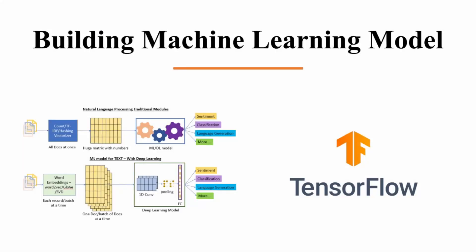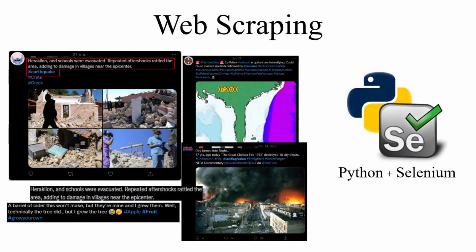Our innovation does text classification using the NLP type of machine learning that we developed using TensorFlow as part of the innovation workflow. The first step is web scraping of Twitter posts that have hashtags related to disaster accidents, using Python and Selenium to retrieve data and use it as input for the model.